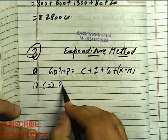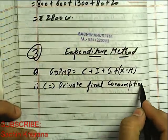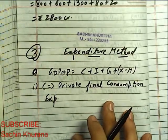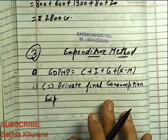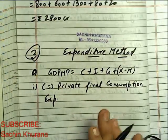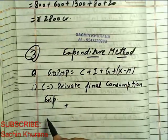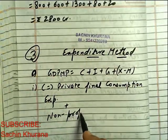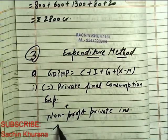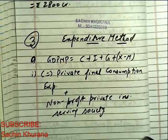The very first component is C, which means Private Final Consumption Expenditure. This is the expenditure that households make on goods or services for the satisfaction of their wants. This includes single-use consumer goods, durable goods, and consumer services. Also included is the expenditure by non-profit private institutions serving the society.